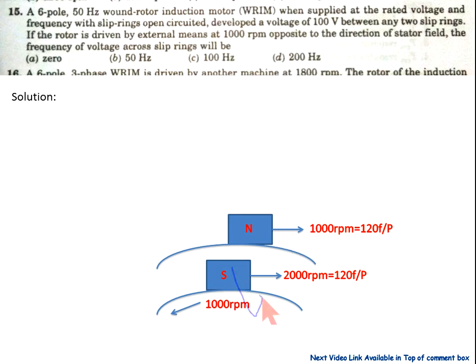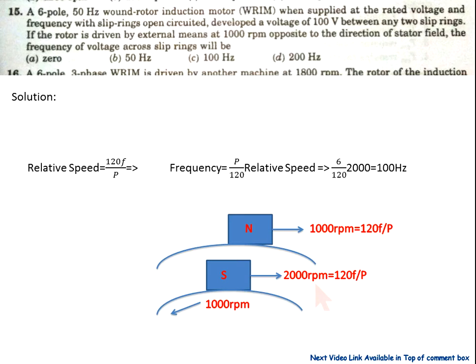The rotor is rotating at 1000 rpm in the opposite direction to the main field. For synchronization between the stator and rotor magnetic fields, the rotor magnetic field must rotate at 2000 rpm. The relative speed between these is 2000 rpm. Using the formula: relative speed = 120f / p, the frequency equals p × relative speed / 120, which gives 100 Hz.